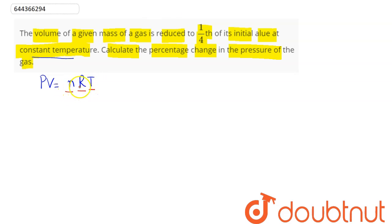Therefore we can say that P₁V₁ = P₂V₂. Now here it says volume is reduced to one-fourth of initial volume.